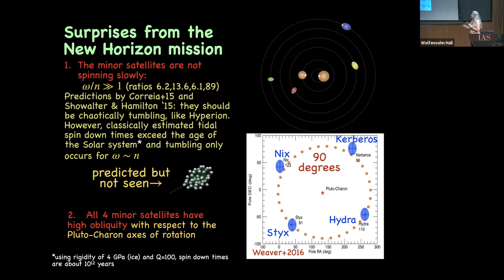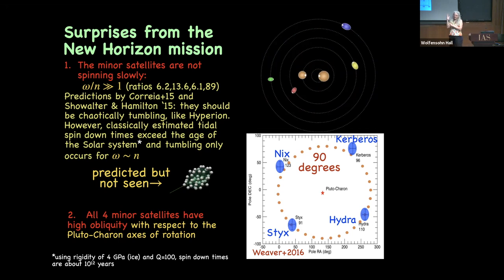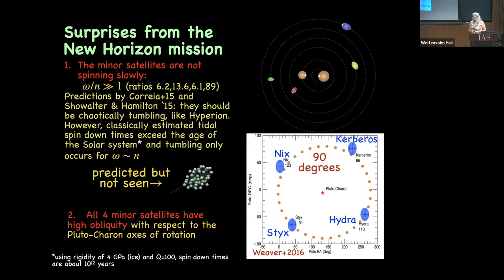What was seen was they were spinning fast — they hadn't spun down. The ratio of spin to mean motion is much bigger than one — like seven or thirteen. The other surprise was they all have high obliquity — their spin axis is very different from the orbital axis — all obliquities near 90 degrees. If they were aligned with the orbital axis, that would be zero obliquity. In hindsight, the fact that they hadn't spun down is kind of expected — if you calculate the spin-down time using the rigidity of ice and a typical Q, it would be 10^12 years.